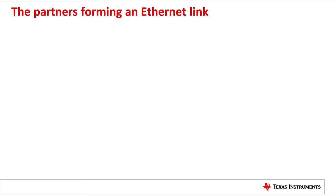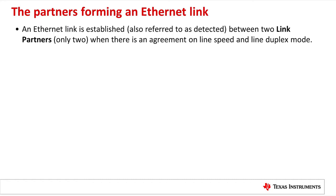Now we will talk about the partners forming an Ethernet link. An Ethernet link is established — also referred to as detected — between two link partners and only two, when there is an agreement on line speed and line duplex mode.